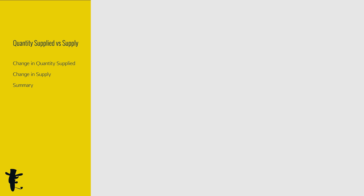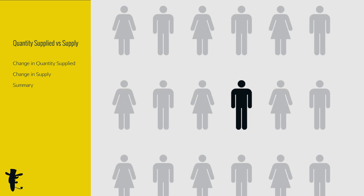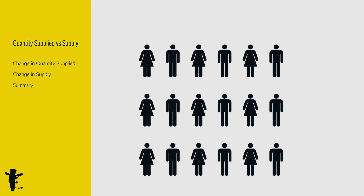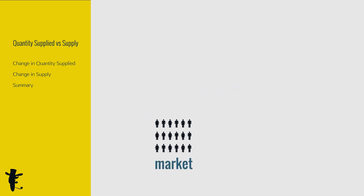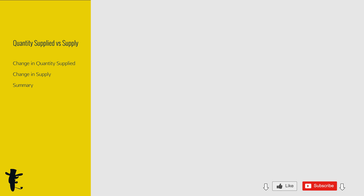So far, we have been talking about individual supply. How do we derive the market supply? In other words, how many cakes can the market supply? If you like this video, remember to like and subscribe. Next up: market supply.